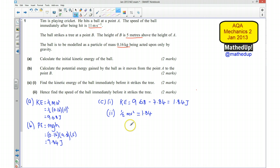And if I stick in the values that I know, that means that a half times the mass is 0.16, times v squared is equal to 1.84, which means v squared is going to be equal to 23, in which case v is going to be 4.8 metres per second.